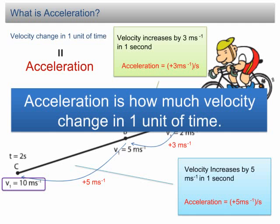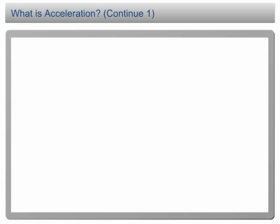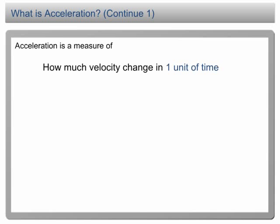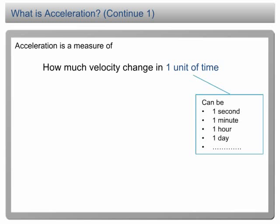What is acceleration? Acceleration is how much velocity change in one unit of time. We have learned that acceleration is a measure of how much velocity change in one unit of time. The one unit of time can be 1 second, 1 minute, 1 hour, 1 day, etc.